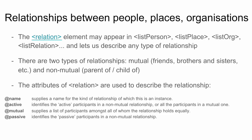You can have several attributes on this relation element: the name attribute, which supplies a definition or name for the kind of relationship you are describing; you can say whether it's an active relationship; you can say if it's a mutual one; and you can say if it's a passive type of relationship.